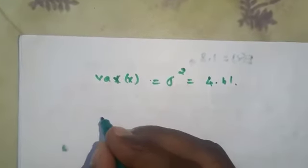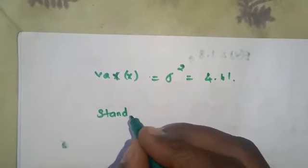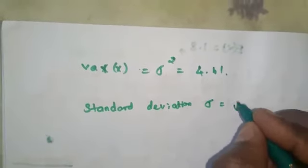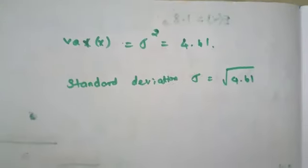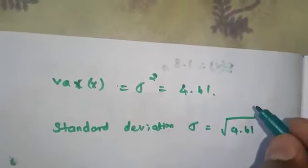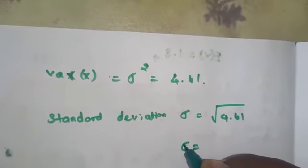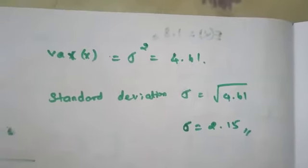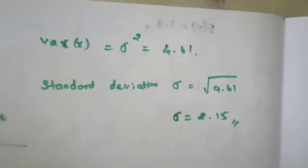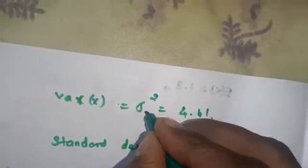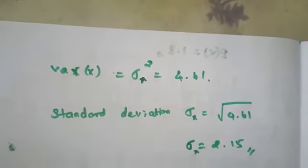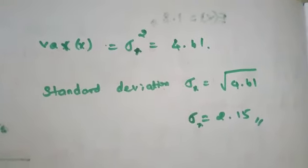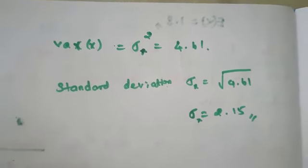Therefore, standard deviation sigma equals the square root of 4.61, which is approximately 2.15. So variance of x is 4.61 and sigma x equals 2.15.